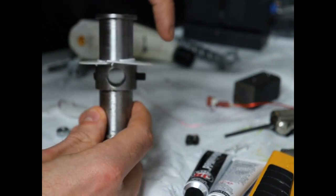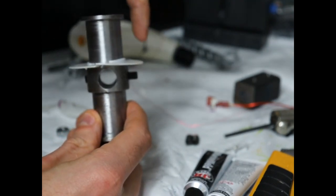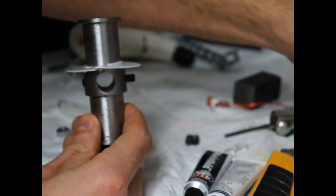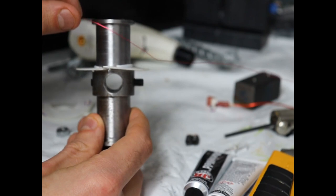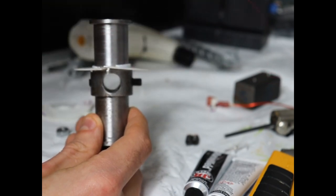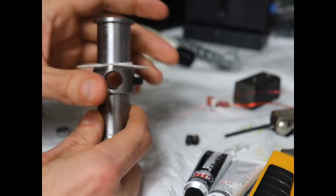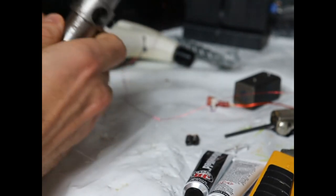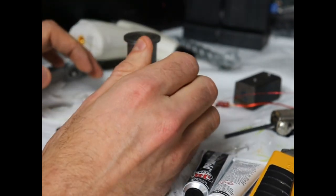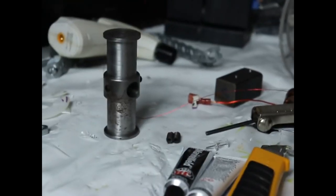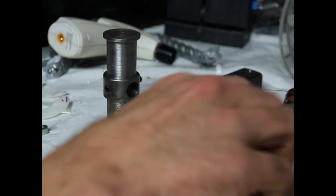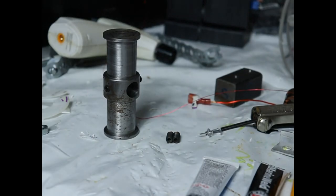I'm going to epoxy it on there so that I can wind the windings of this 28 gauge around there, and I'll be able to build it up more on this side. So next step is to mix up a little bit of epoxy.